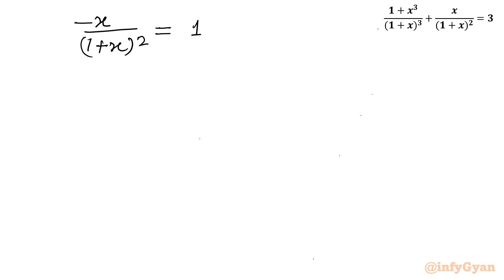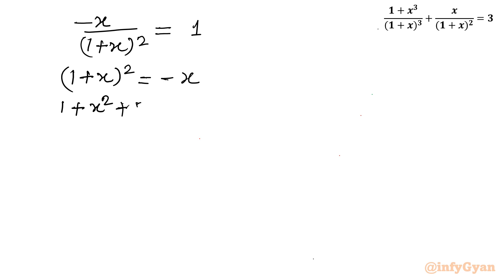Cross-multiplying gives (1 + x)² = −x. Expanding using (a + b)² = a² + 2ab + b²: 1 + 2x + x² = −x. Taking all terms to the left-hand side gives x² + 3x + 1 = 0.